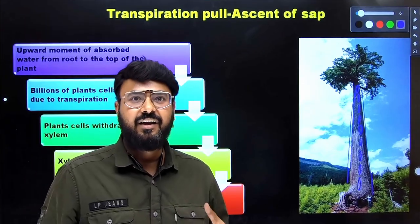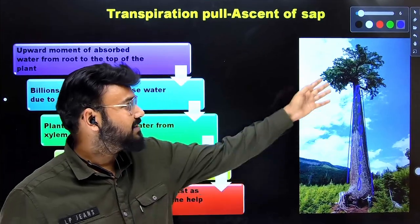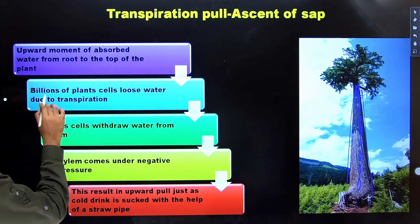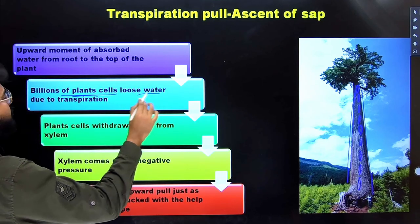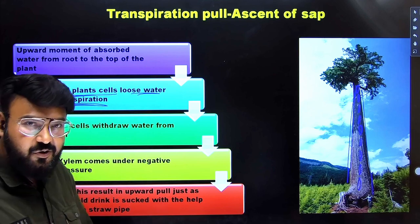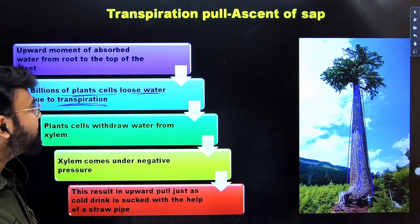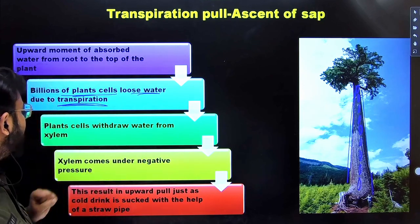So let's understand how it is transported at such a long distance in the tall trees. So answer is very simple. There will be billions of plant cells. They lose water due to transpiration. Like I told you, whatever the plants absorb the water, 99% of them is lost due to transpiration. So once the water is lost so much, what will happen?